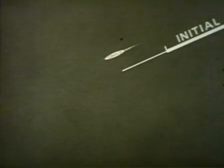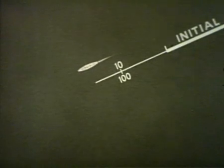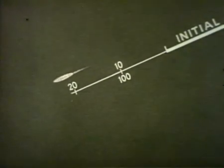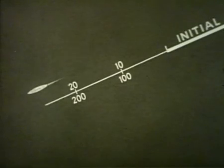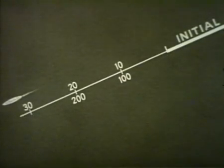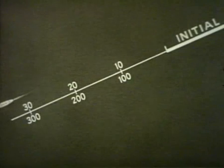Starting again at the initial position and with range changing at a constant rate — say, 10 yards a second — it's easy to see that after 10 seconds, range change is 100 yards. After 20 seconds, 200. After 30, 300, and so on.